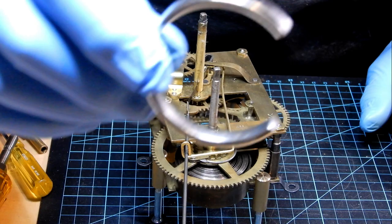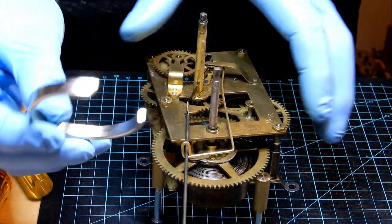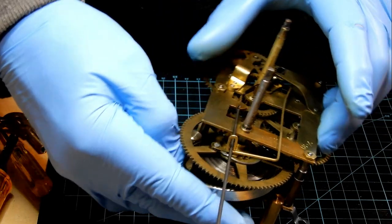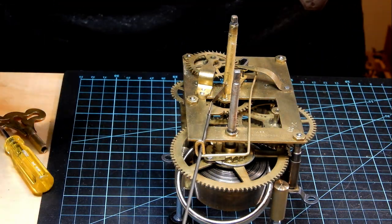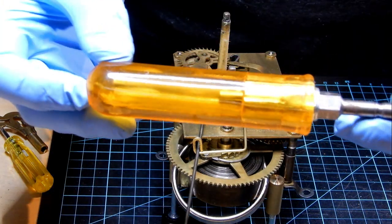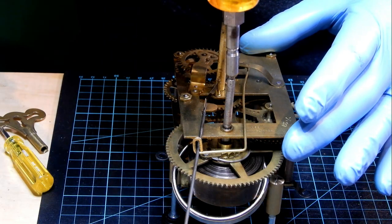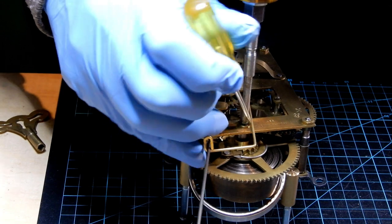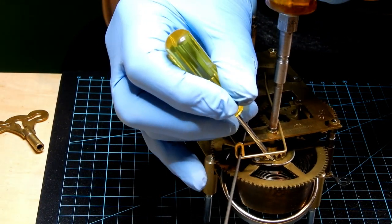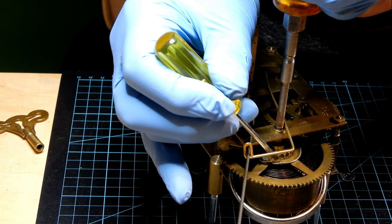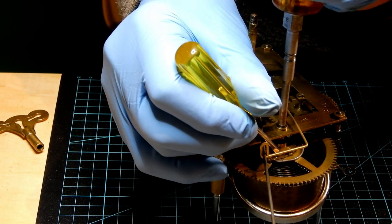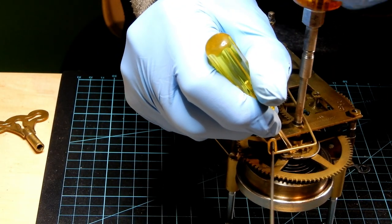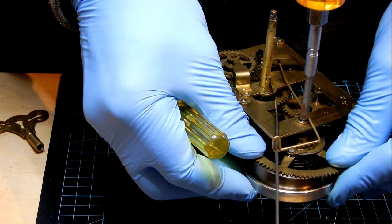We're going to put a mainspring clamp on the spring, then we'll let it down so that the clamp takes all the pressure in the spring. Using a let down tool on top of the winding arbor, we'll tighten it slowly. Then holding the click back, we'll slowly let the let down tool turn around. The mainspring clamp is getting tighter. All the tension in the spring is now contained in the mainspring clamp.